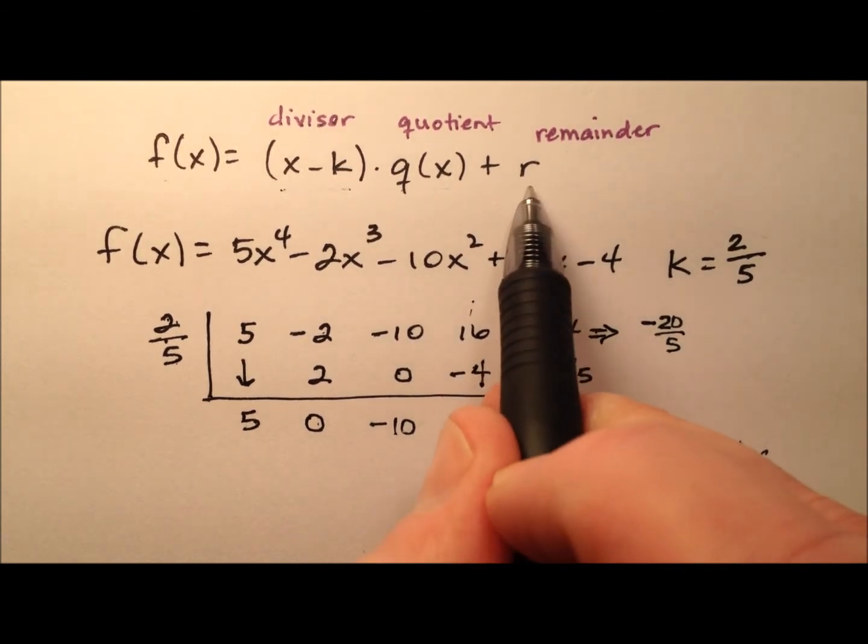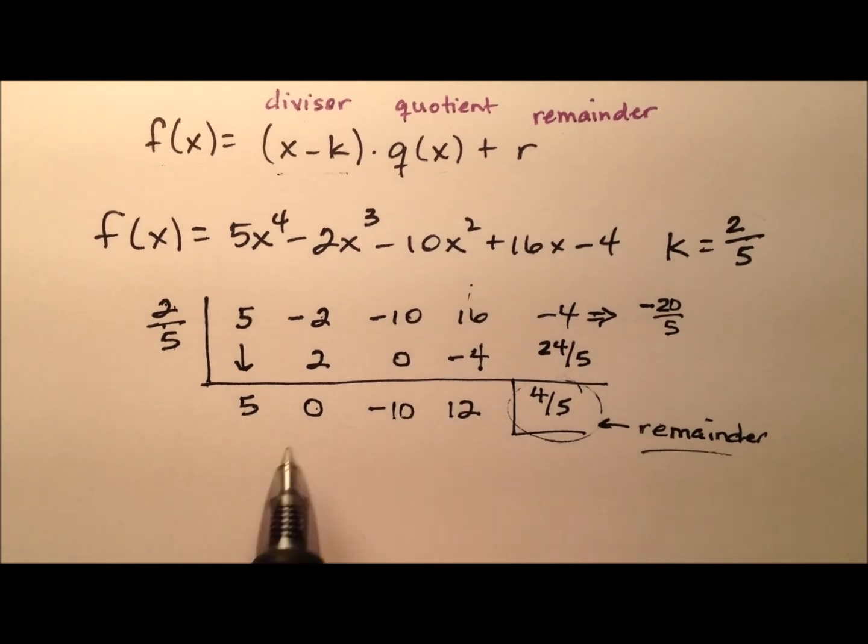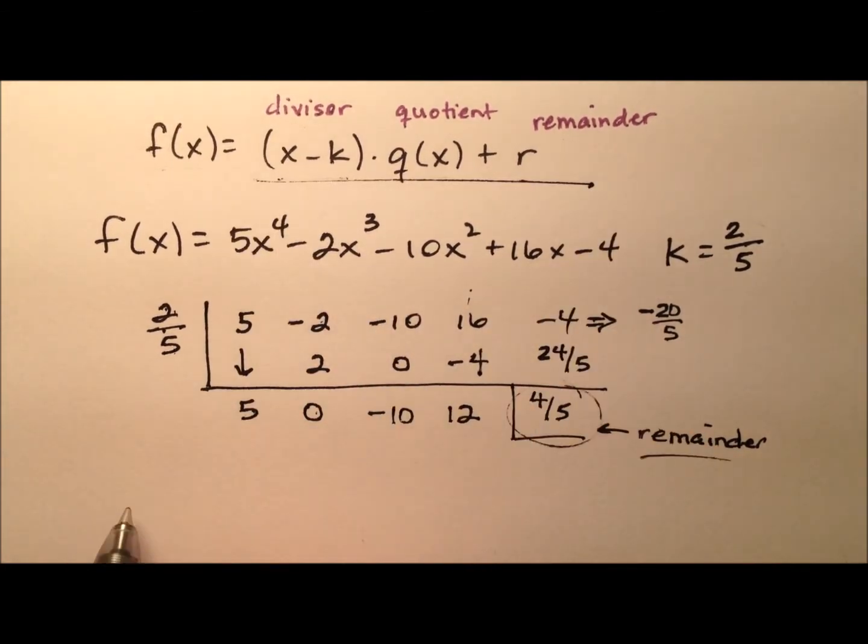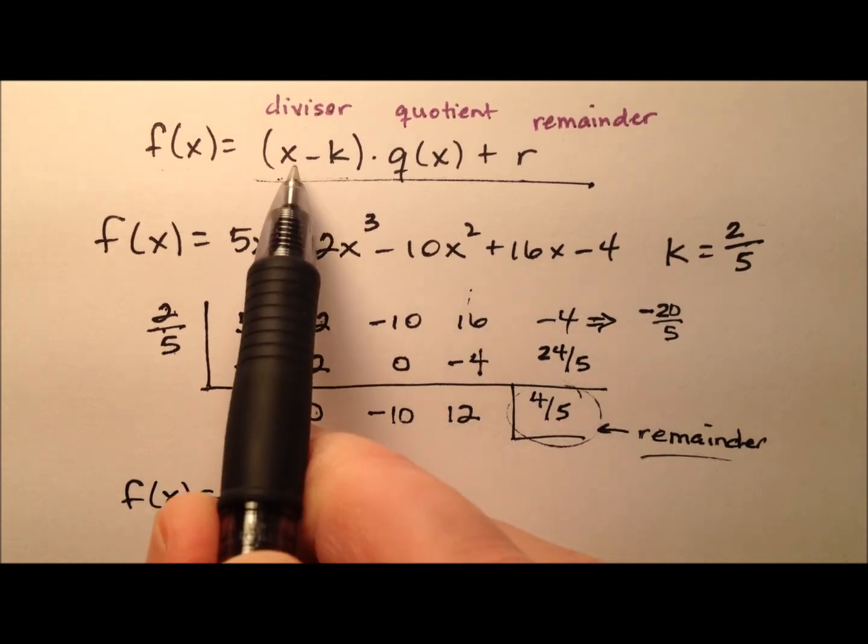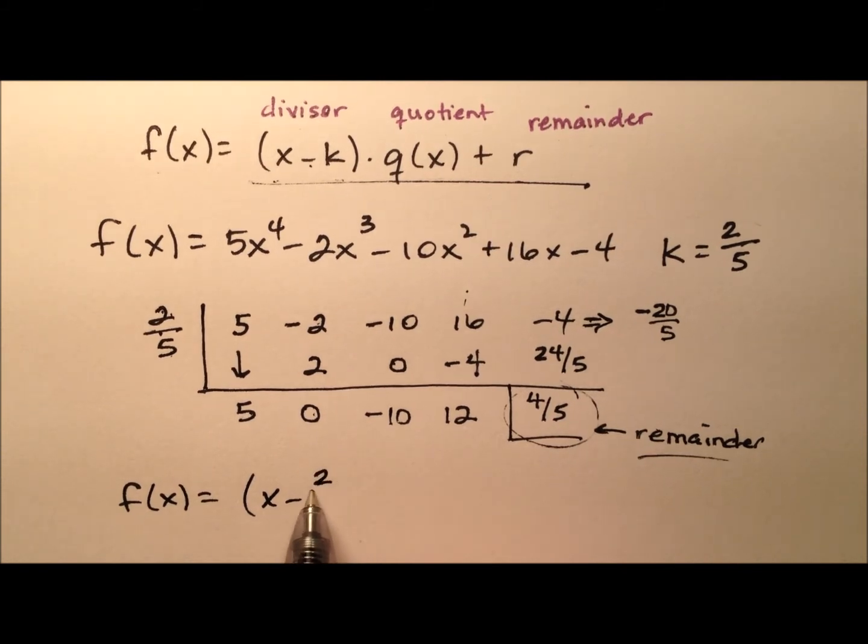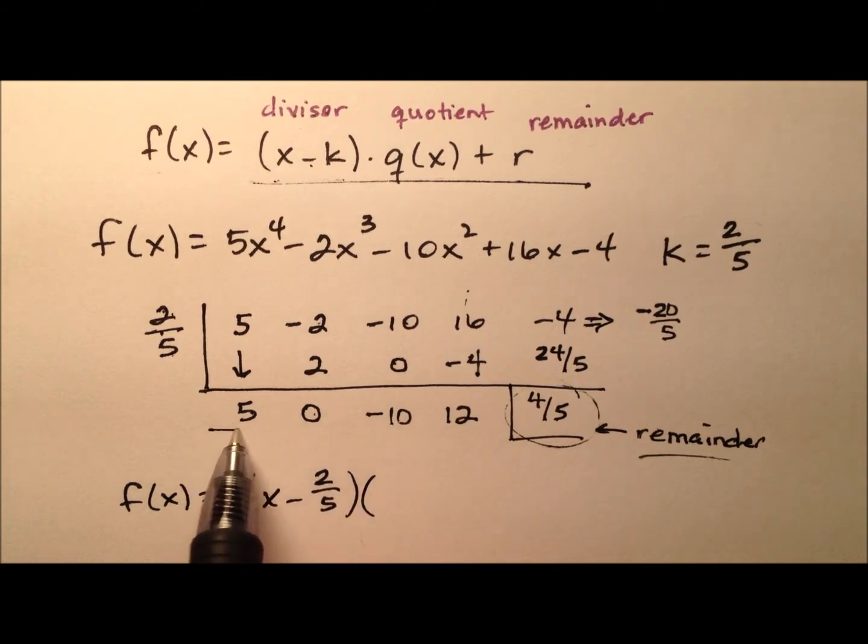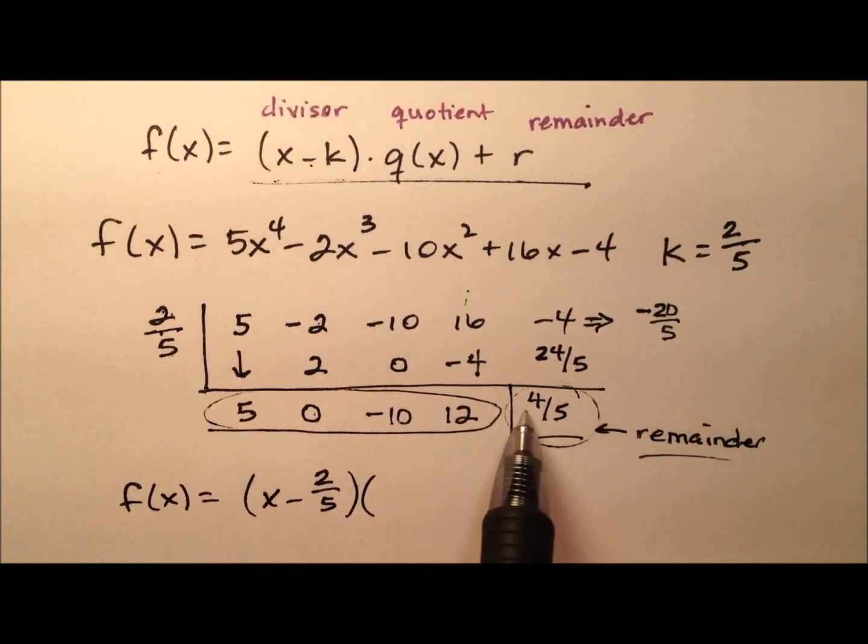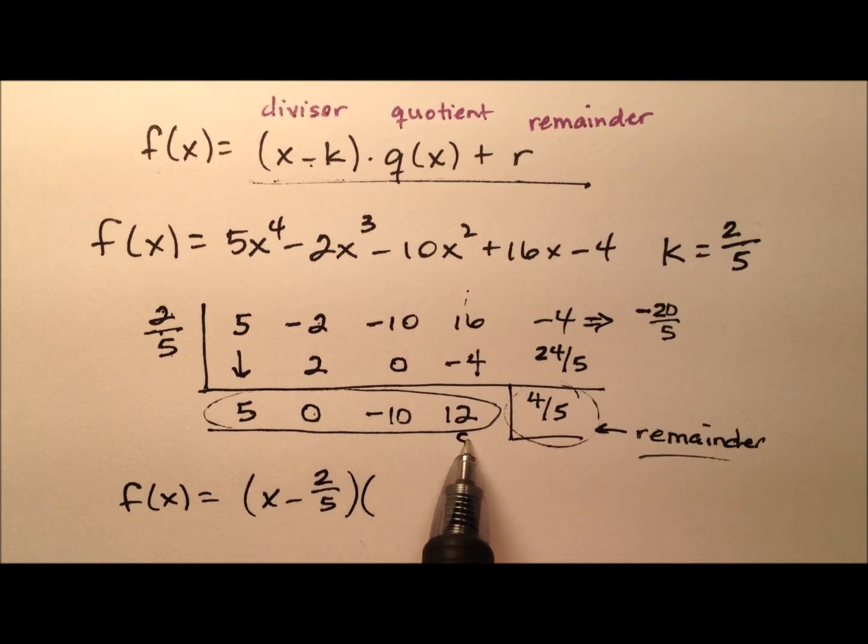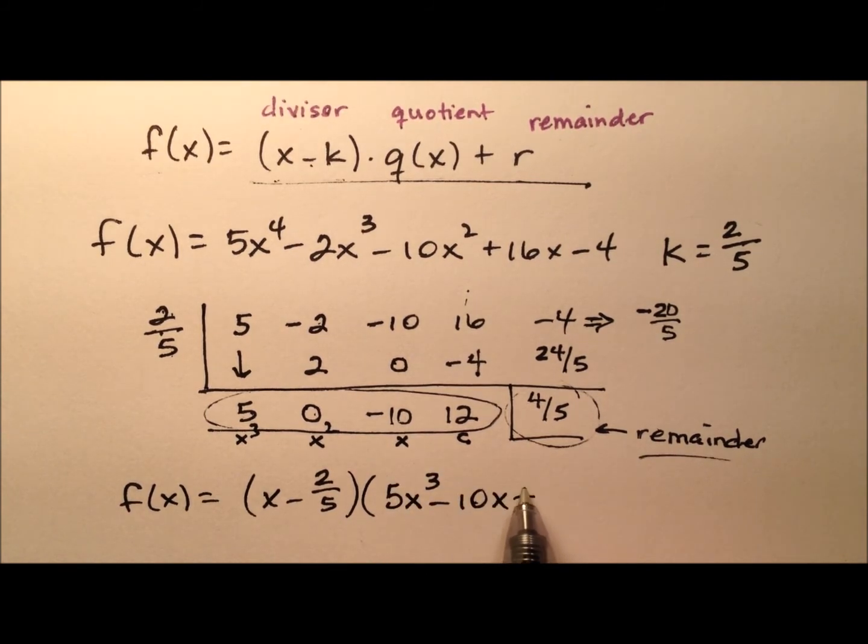And so this remainder 4/5 ultimately will function as my r up here. So let's go ahead and rewrite this polynomial now in the form that we're seeking. So f(x) equals x minus k. So I'm going to say x minus that 2/5 that we divided by. And then it's going to be this quotient. I need to take this polynomial piece that was our quotient and write it. So this is our constant, our linear term, our quadratic term, and our cubic term.